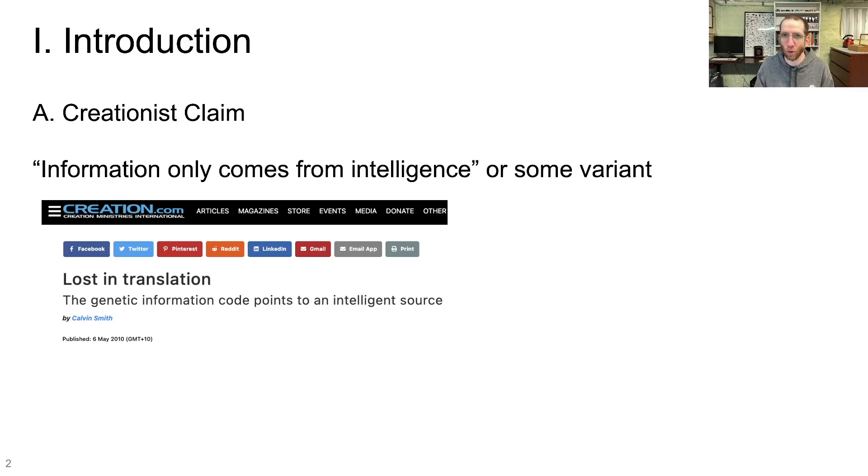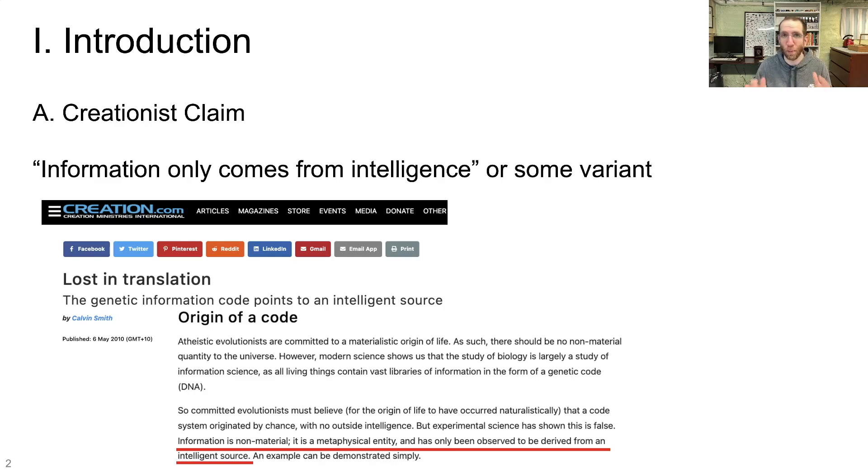In an article called Lost in Translation, they're talking about the genetic code. They say the genetic information code points to an intelligent source. They specifically say, if you look at the part highlighted in red down here, they say information is non-material. It is a metaphysical entity and has only been observed to be derived from an intelligent source. And it's that last part that is key. Only been observed to be derived from an intelligent source.